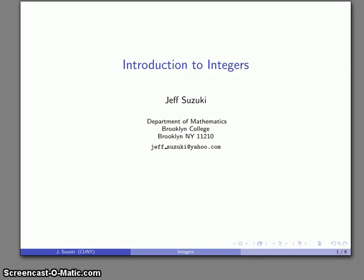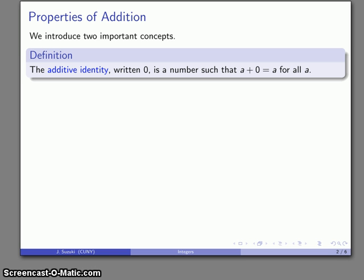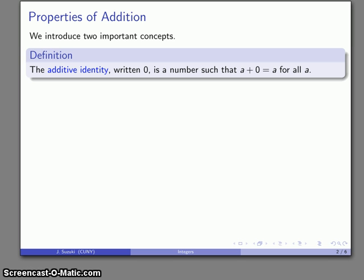Our next major extension of the number system is to the integers, and we'll introduce two important concepts. One is the idea of the additive identity, written as zero — a number where if I add zero, I don't change the value of the other addend. So a plus zero is equal to a for all values a.